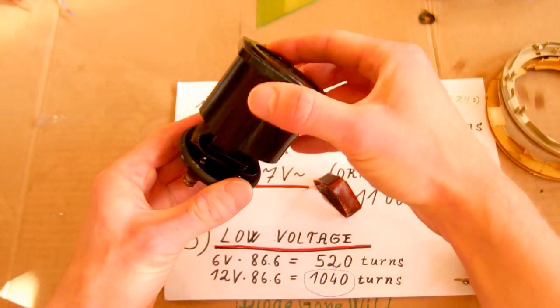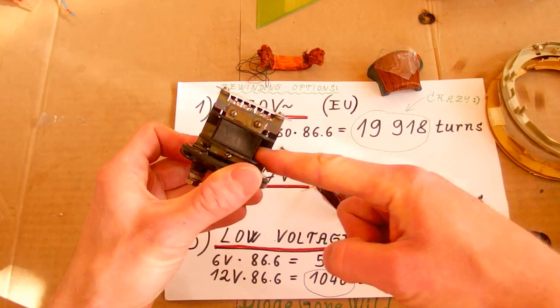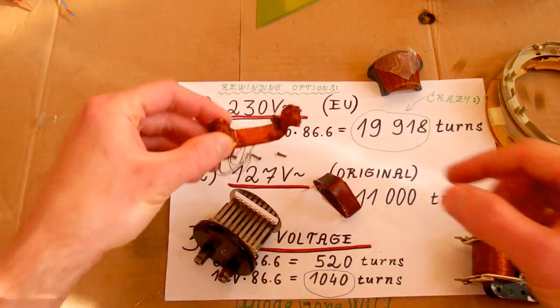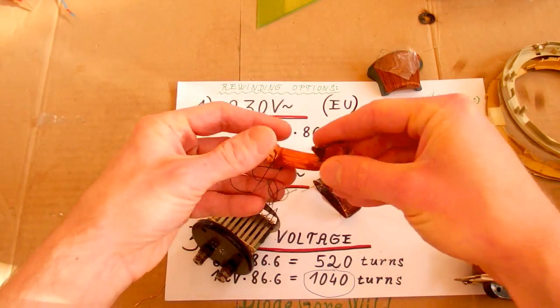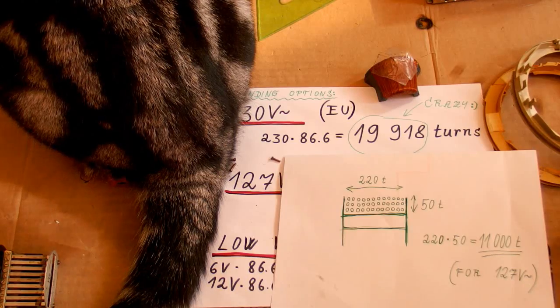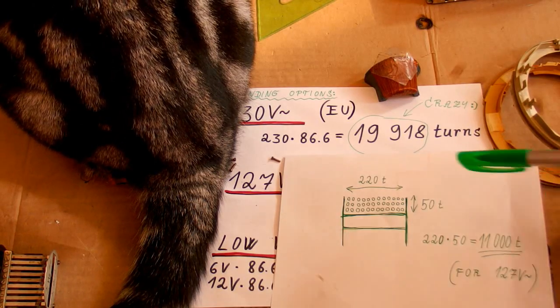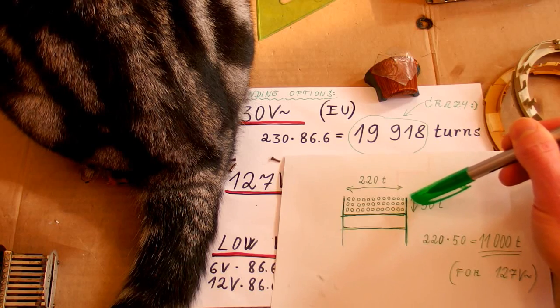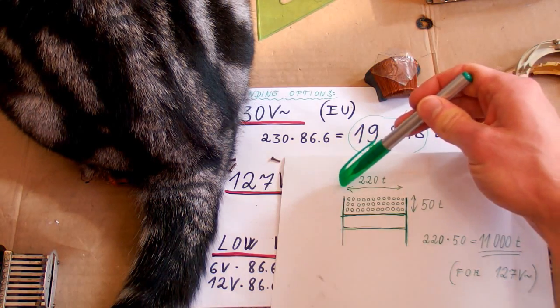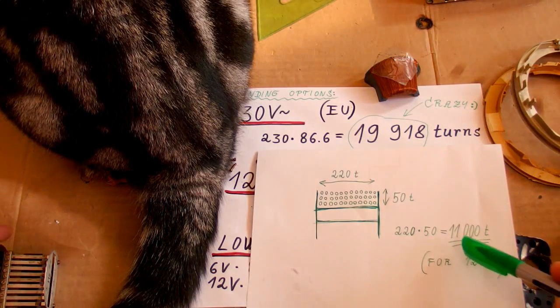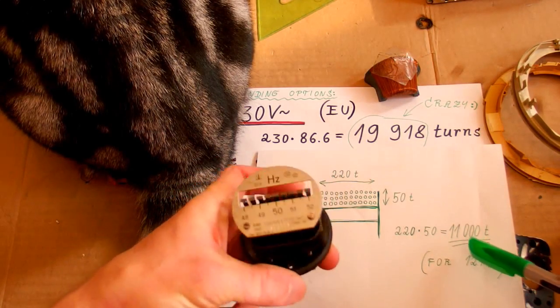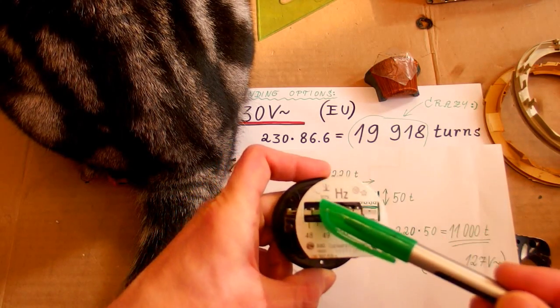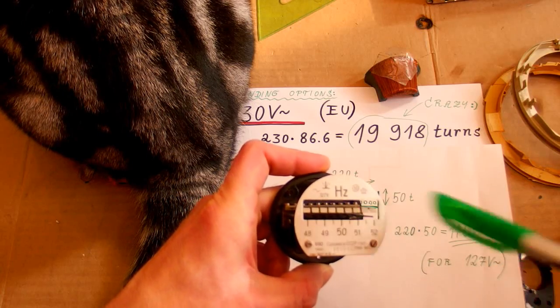Now the coil has no winding on it because I've removed the original winding which was open circuit. I've made a very rough guesstimate of the original number of turns based on the number of layers and turns in each layer. It came out as 11,000 turns for the original voltage which was 127 volts.